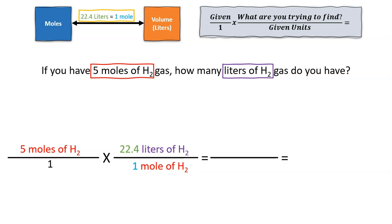Now we need to multiply everything on top. And that is 5 times 22.4. And when we solve this, we get 112. Now we multiply everything on bottom, which is 1 times 1, and we get 1. Then we divide and we get 112.